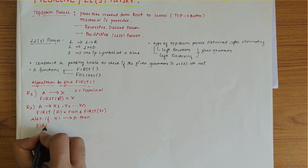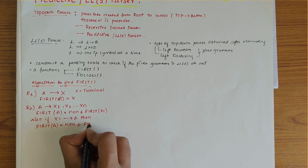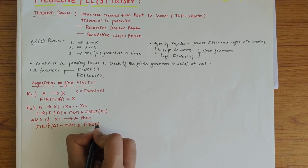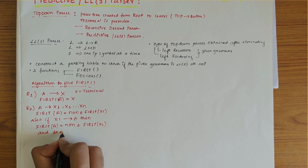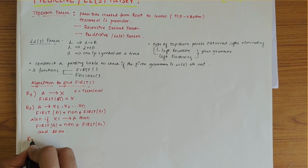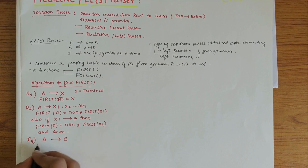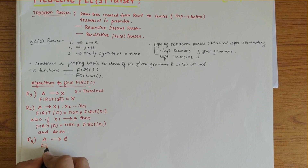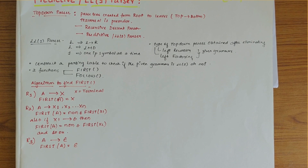Continuing rule two: FIRST of A is equal to non-epsilon FIRST of X2, and this continues so on. Rule three states that if A derives epsilon, then FIRST of A is equal to epsilon. These are the algorithms for FIRST. Now let's write the algorithm for FOLLOW.